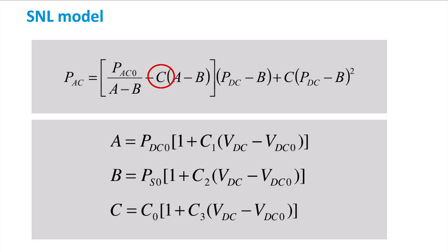we can find some coefficients already seen before, such as PDC0, which is the nominal DC input power, PS0, which is the night or self-consumption of the inverter, VDC, which is the PV array side voltage, and VDC0, which is the nominal DC voltage value. The last parameters are always provided by the manufacturers of the inverter.